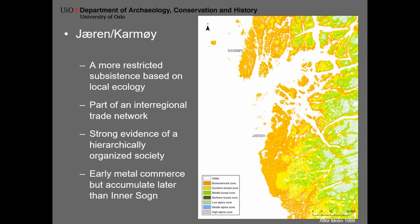The second region, Jaren and Kalmy, has a much more restricted subsistence based on the local ecology. All the settlement sites and burial mounds are located on the outer crest in one vegetation zone. The region is definitely part of an inter-regional trade network. There is strong evidence of a hierarchically organized society — dozens of monumental burial mounds and a rich burial assembly. There is early metal commerce here as well, but it accumulates slightly later than what we see in Innozong.